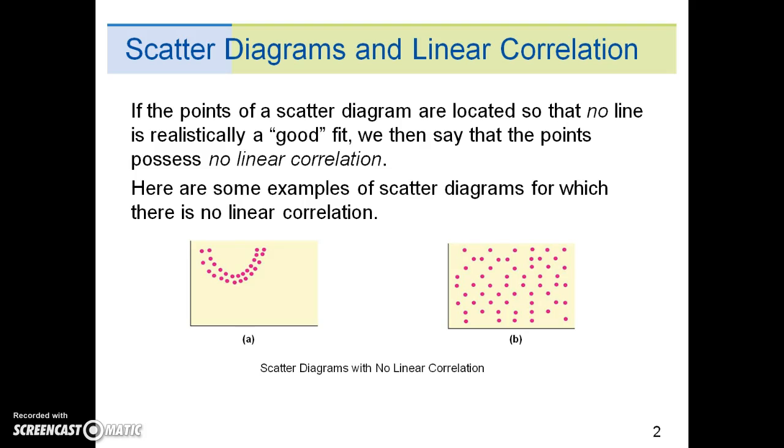Here are some examples of scatter diagrams for which there is no linear correlation. In other words, we are unable to draw a straight line using the data.